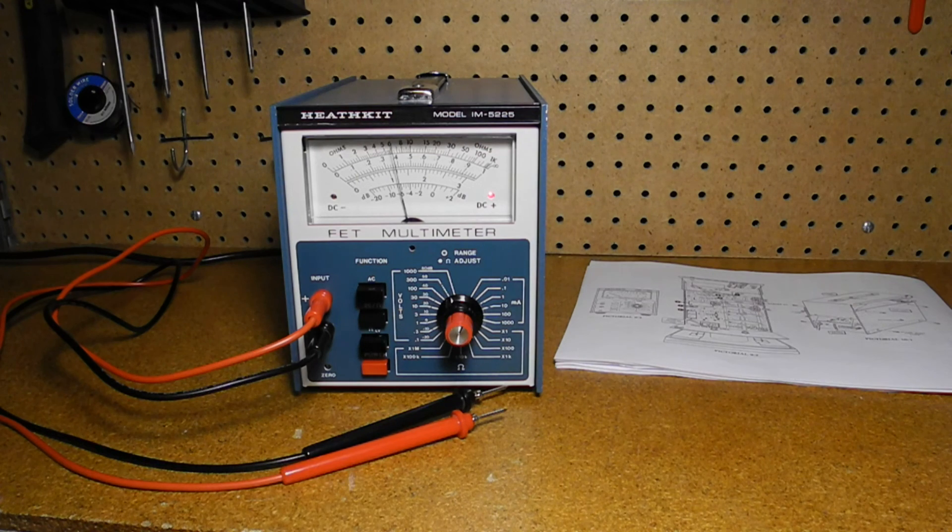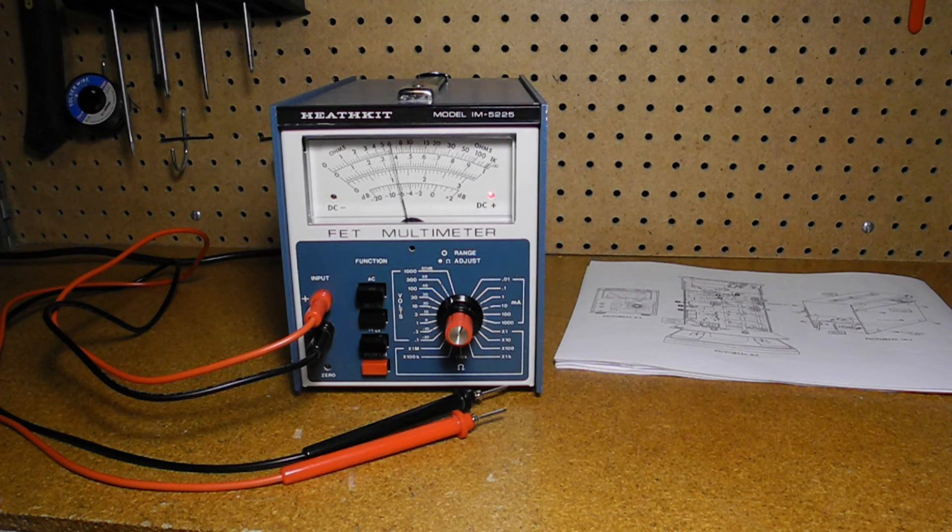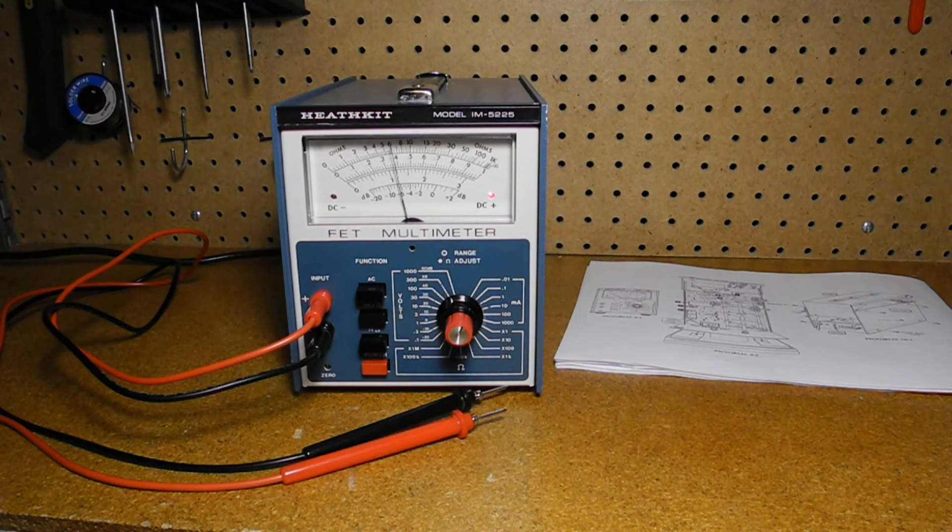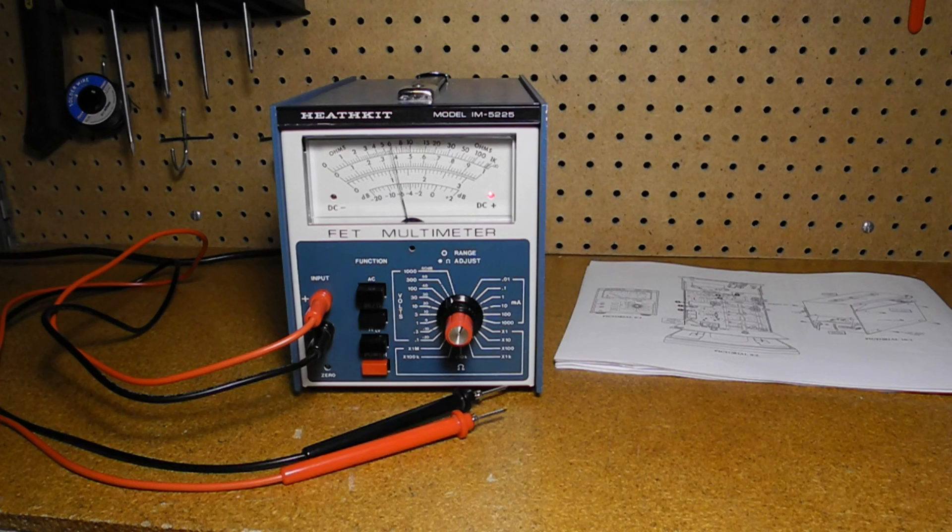but there are occasions where an analog meter is useful, such as adjusting signals for a peak or a null, or to see slowly varying voltages. This meter has the advantage over VTVMs that there's no need for warm-up or batteries, and offers a higher input impedance than VOMs. So my hope is to eventually find a replacement meter movement so I can restore it to proper operation.